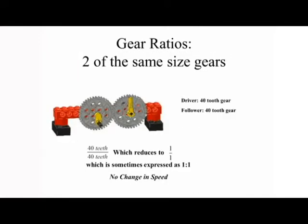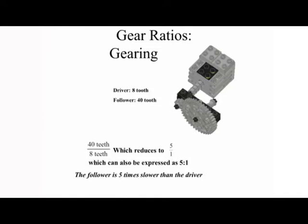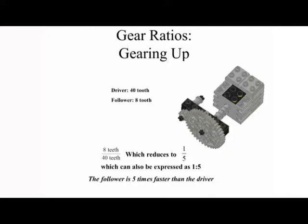Gear ratio examples: two gears of the same size — 40 teeth over 40 teeth — reduces to 1 over 1, or a 1:1 ratio, meaning no change in speed. For gearing down: 40 teeth over 8 teeth reduces to 5 over 1, a 5:1 ratio, meaning the follower is 5 times slower than the driver. For gearing up: 8 teeth over 40 teeth reduces to 1:5, meaning the follower is 5 times faster than the driver.